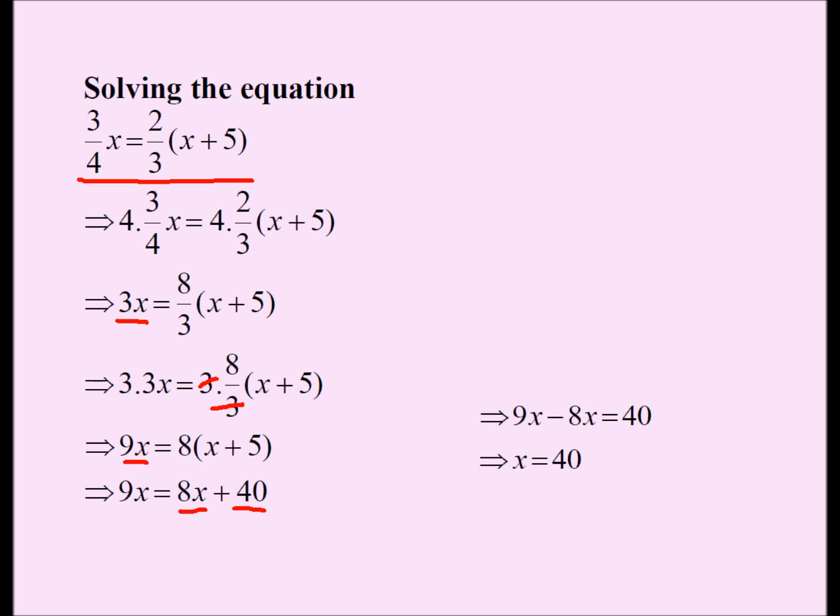And then I move my variables around. 9x minus 8x is x, so x is 40. Remember, x is the number of females and x plus 5 is the number of males. So let's look at our answer.